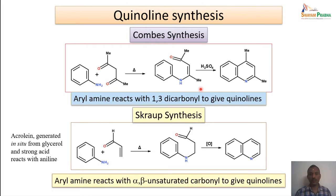In Skraup synthesis, acrolein is the starting material, generated in situ from glycerol using a strong acid. Acrolein is a 3-carbon unit with a carbonyl group — the actual reactive intermediate. An aromatic amino unit and this carbonyl unit react together at high temperature, and cyclization proceeds similarly to the Combes synthesis, leading to Quinoline. In essence, aryl amines react with alpha-beta unsaturated carbonyl compounds to give Quinolines.